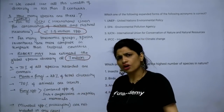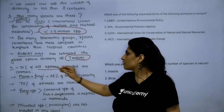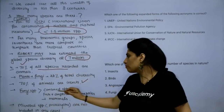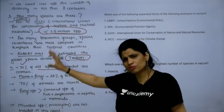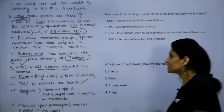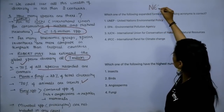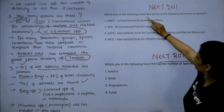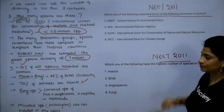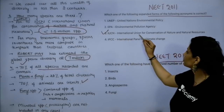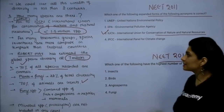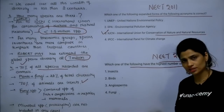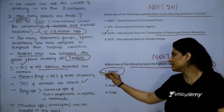There are 7 million estimated species total. NEET 2011 also asked about the IUCN full form — International Union for Conservation of Nature and Natural Resources. Another question: which group has the highest number of species in nature? The answer is insects, since 70% of all animals are insects.